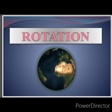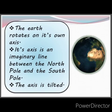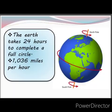Rotation. The Earth rotates on its own axis, and its axis is an imaginary line between the North Pole and South Pole. The axis is tilted. The Earth takes 24 hours to complete a full circle.